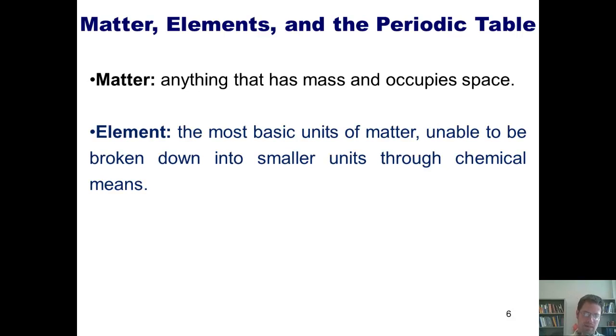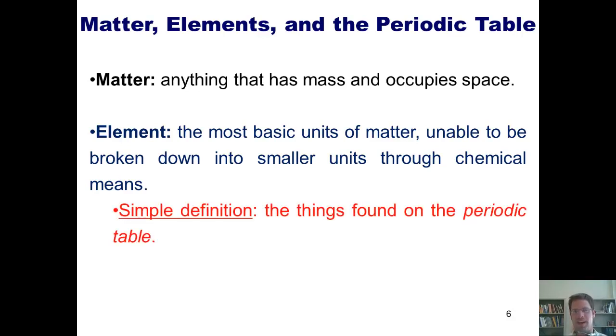What is an element? An element is the most basic unit of matter, unable to be broken down into smaller units through chemical means. Simple definition for that is, elements are the things found on the periodic table.